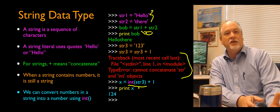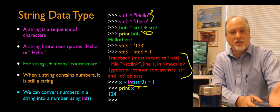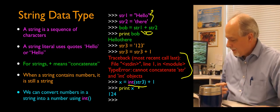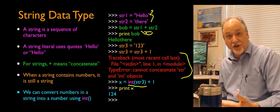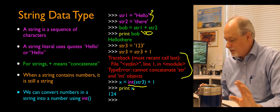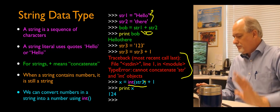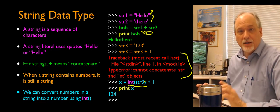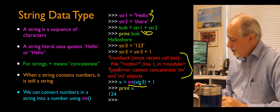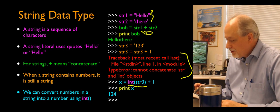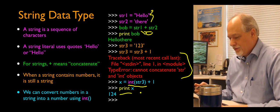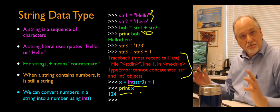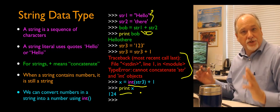See how much Python you already know? You call the int function — you know what that is. So you convert the string to an integer, then you add 1 to it, and then we get 124. So there you go.